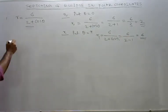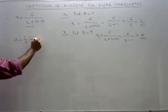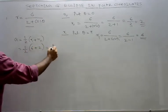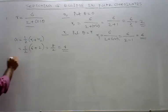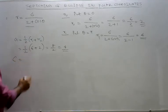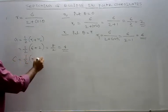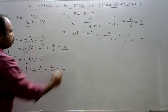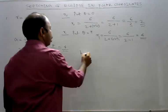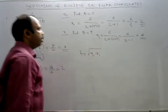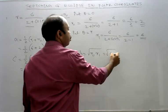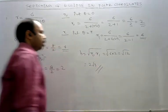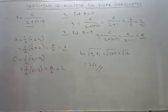Now we find A equals 1 by 2 into R1 plus R0, which is 1 by 2 into 6 plus 2, which is 8 by 2 equals 4. Then C: 1 by 2 into R1 minus R0, which is 1 by 2 into 6 minus 2 equals 4 by 2 equals 2. Then B: root of R0, R1. That is root of 6 into 2 is root 12. Root 12 is 2 root 3. So we have R0, R1, A, B, and C.